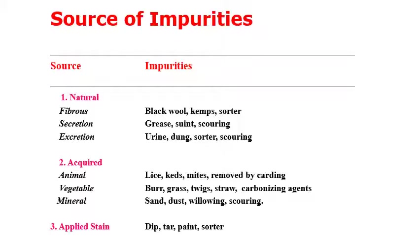Acquired impurities of animal origin include lice, scabs, and mites removed by carding. Vegetable-origin acquired impurities include burrs, grass, twigs, and straw, removed by carbonizing agents. Mineral impurities such as sand and dust are removed by willowing and scouring. The third category is applied stains — different kinds of stains used for identification of sheep in animal husbandry practices, such as tar and paint.